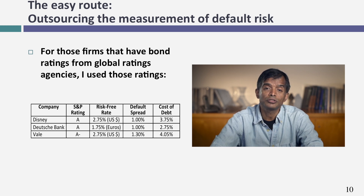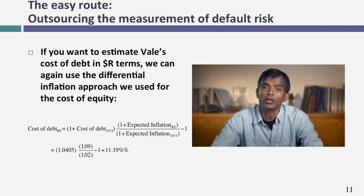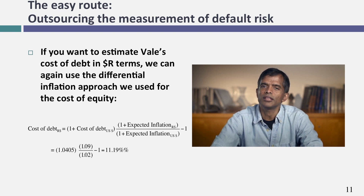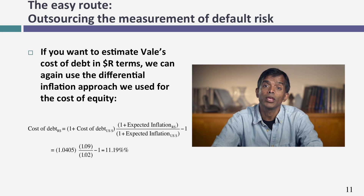Now, if you're interested in estimating a nominal Brazilian real cost of debt rather than a US dollar cost of debt for Vale, it's simple to convert — and it mirrors exactly what we did with the cost of equity. Take 1 plus the US dollar cost of debt of 4.05%, and scale it up to reflect the higher inflation in Brazil — 9% versus 2% — using the compounding effect. Multiplying by 1.09 divided by 1.02 gives a nominal real cost of debt for Vale of 11.19%. It's simple to go across currencies if you remember this differential inflation approach.